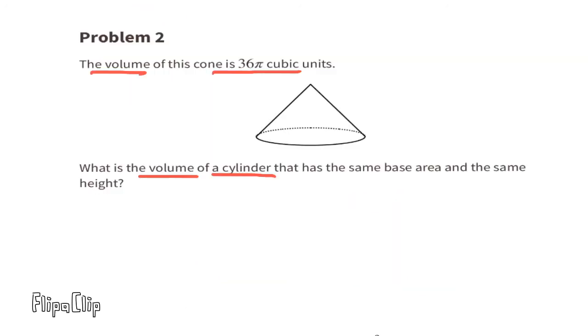Problem number 2. The volume of the cone is 36 times pi cubic units. What is the volume of a cylinder that has the same base area and the same height?